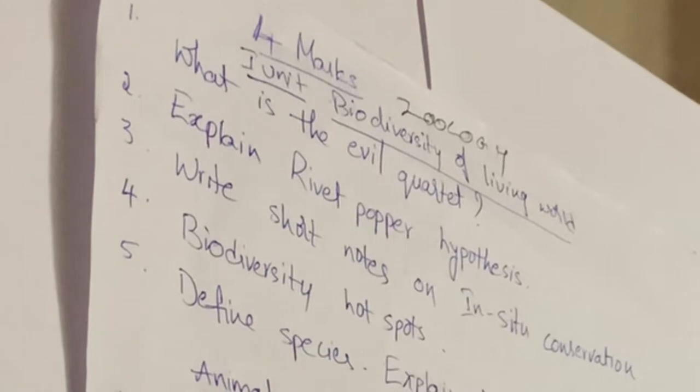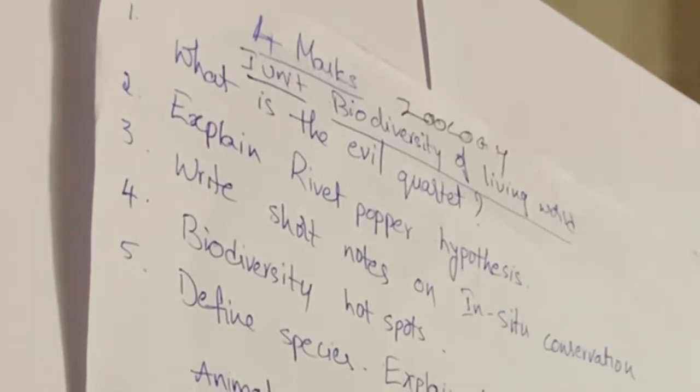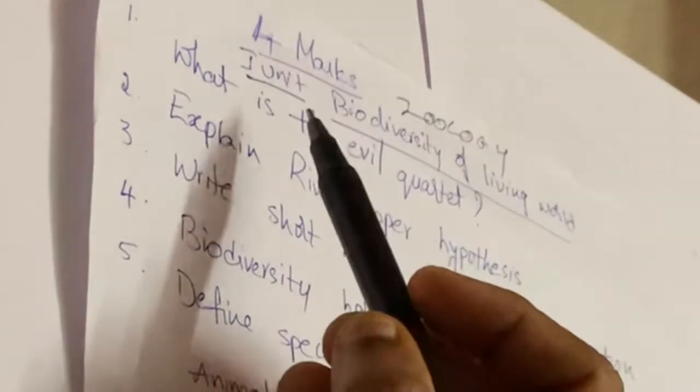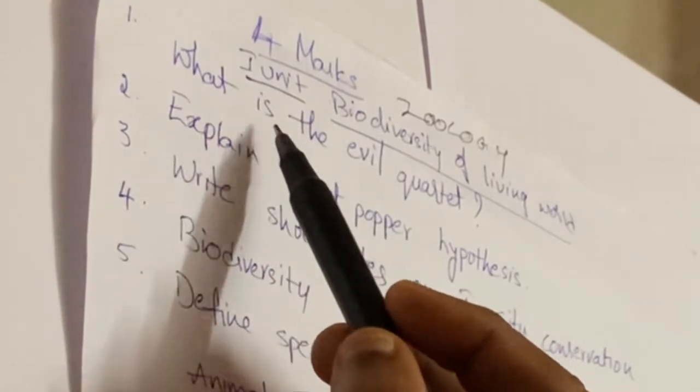In these 30 days, you can score at least a minimum of 21 marks if you study all these questions and answers from the first unit, Biodiversity of Living World. The important questions are: What is the evil quartet?